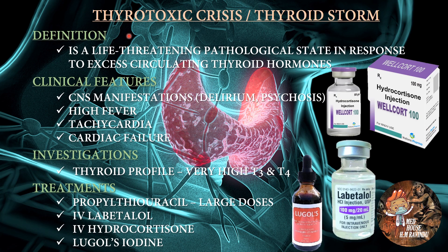Before the end of the lecture, I want to talk about the most important condition called thyroid toxic crisis, or thyroid storm. The definition of thyroid toxic crisis is a life-threatening pathological state in response to excess circulating thyroid hormones. Clinical features of thyroid toxic crisis are CNS manifestations like delirium and psychosis, high fever, tachycardia, and cardiac failure.